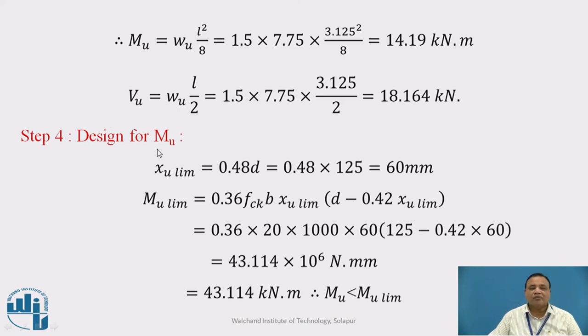Step 4: Design for M_u. When designing, first find M_u limit. For calculating M_u limit, you can find from X_u limit. X_u limit is 0.48D, which is 0.48 times 125 equals 60 mm. M_u limit equals 0.36 f_ck b X_u limit times the lever arm (D minus 0.42 X_u limit). If you substitute all values, you will get M_u limit as 43.114 kN·m.